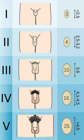Tanner 4, Increased breast sizing and elevation, areola and papilla form a secondary mound projecting from the contour of the surrounding breast, 13 to 15.